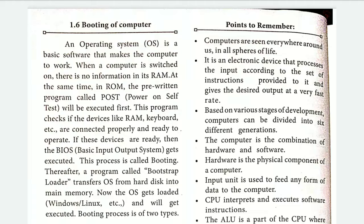RAM then executes the information through the booting process. There are two types of booting: cold boot and warm boot. Cold boot is the booting process done by the computer itself — unsaved information will reappear. Warm boot is the booting process initiated by the user — unsaved information will not reappear. That is the difference between cold boot and warm boot.